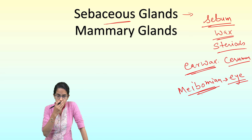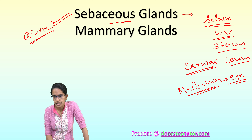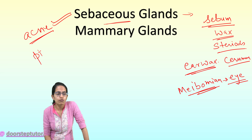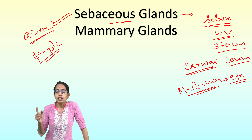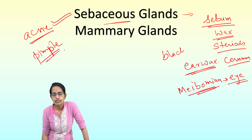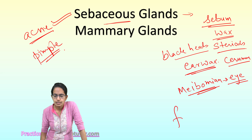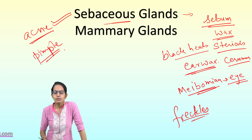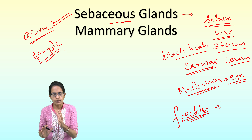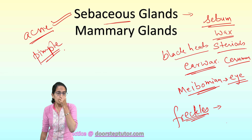If there is inflammation of the sebaceous glands, it leads to formation of acne. If sebaceous glands accumulate sebum below the skin, it leads to formation of pimples. When sebum is oxidized and turns black, blackheads are formed — commonly seen outside the nostrils. Another change is freckles, which are light and dark patches on the skin due to the pigmentation by melanin.